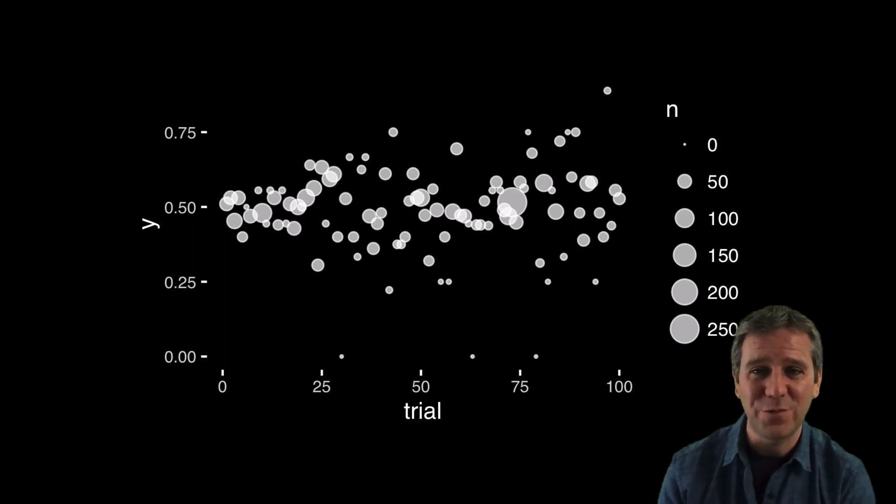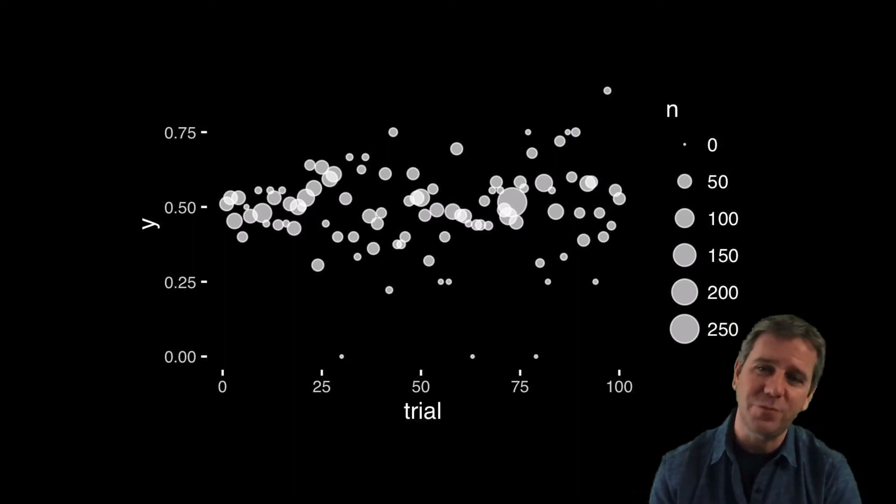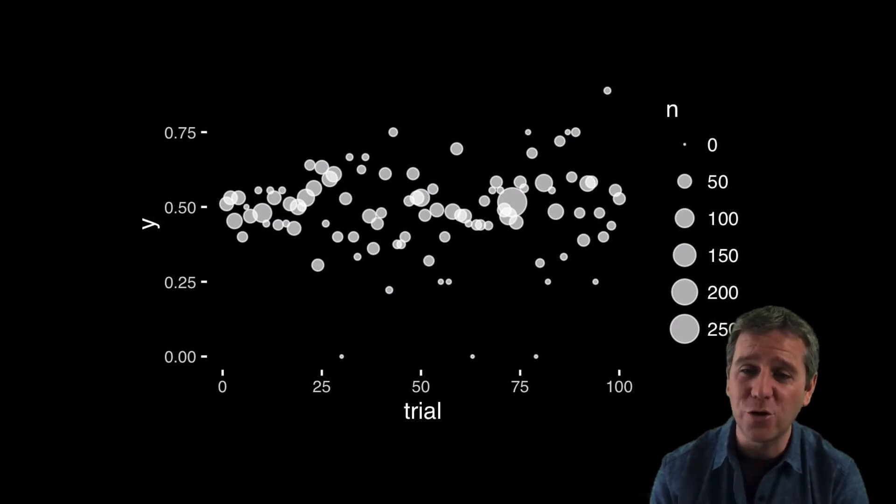This kind of plot might seem a bit odd, and indeed it is, but we actually use them all the time—for example in a bubble plot like this one where the area of the points displays a third numeric value along with the x and y axes.